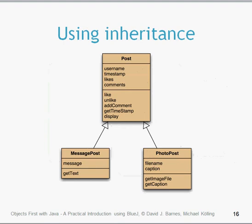What we can do to get around this code duplication and write much better structured code is to use inheritance. Here we have a new class called Post, and the subtypes of Post will be MessagePost and PhotoPost. A lot of the code duplication has been taken out. The Post class has username, timestamp, likes, and comments attributes, while MessagePost only needs a message attribute and PhotoPost needs filename and caption. The rest of the attributes get inherited from the Post class.